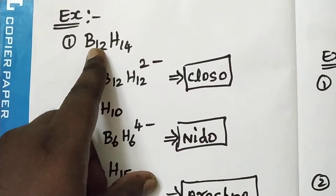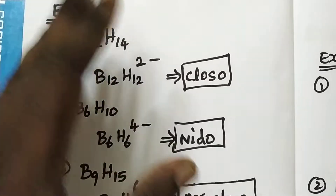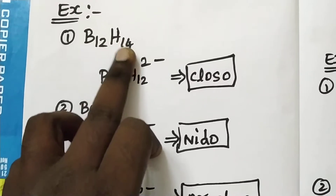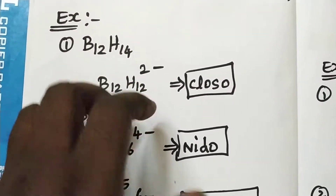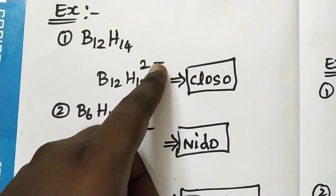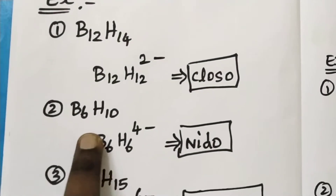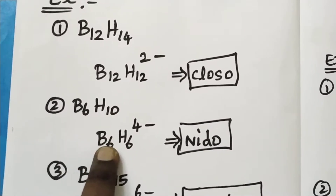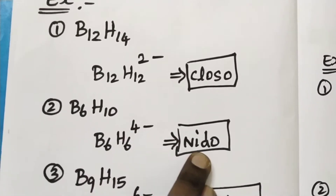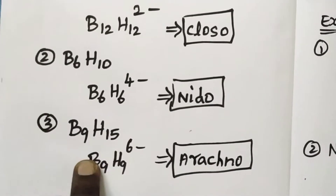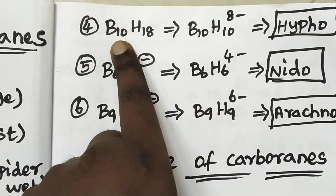For example, B12H14: if you have a charge of 4, that equals nido (4-). For B9H15, that is B9H9, which equals a charge of 6. So 6 minus 1 equals 6 — that is the arachno structure. Let's look at the next example.